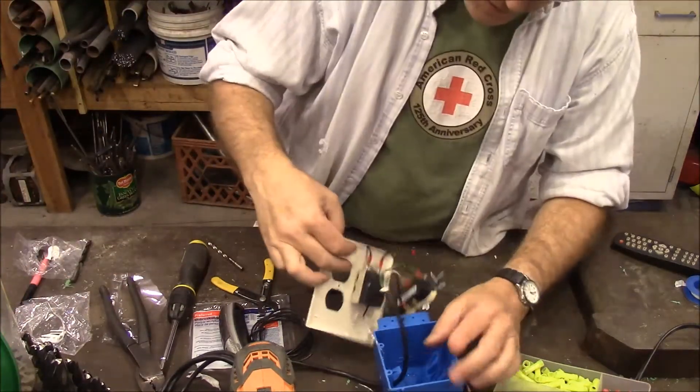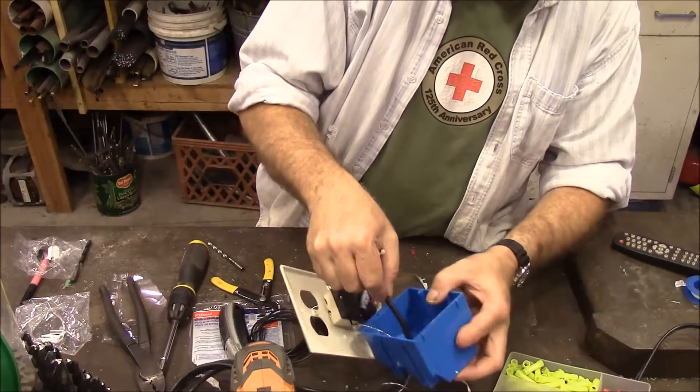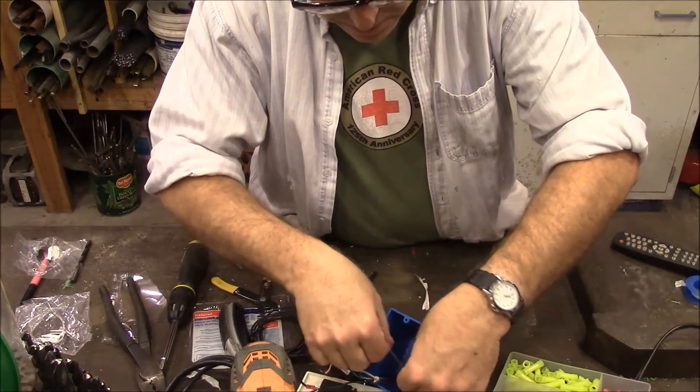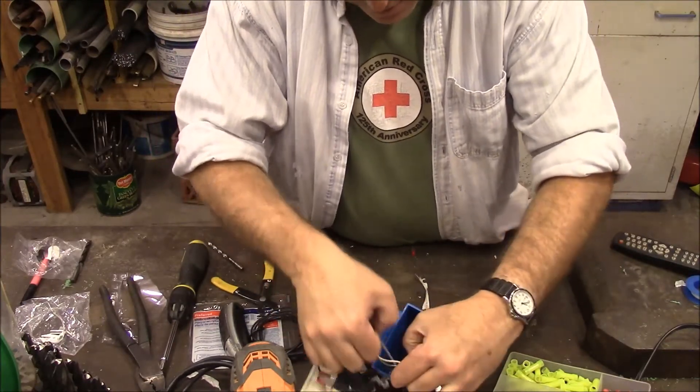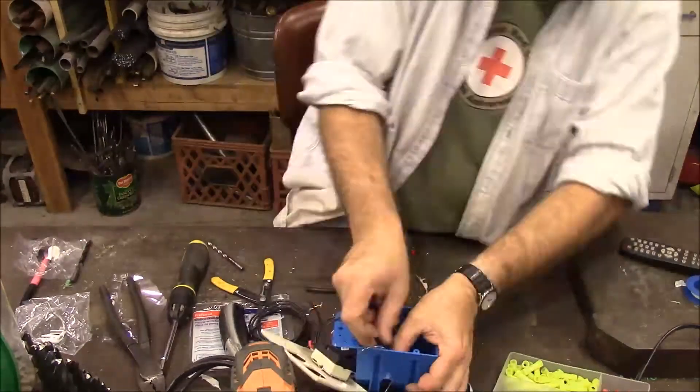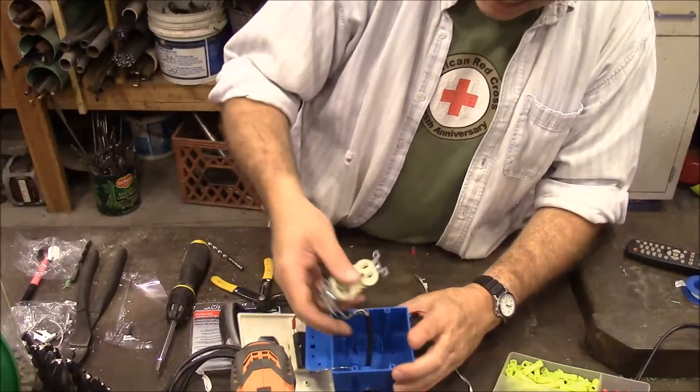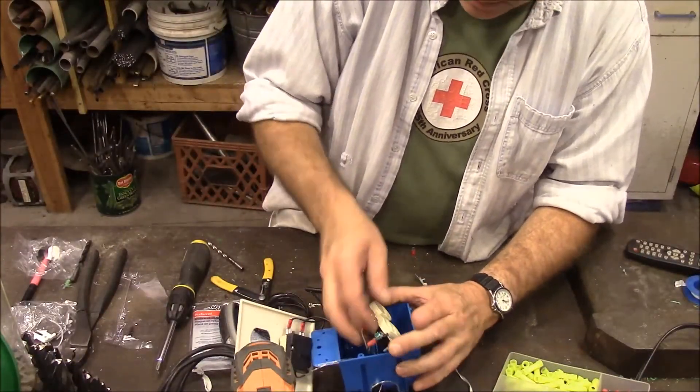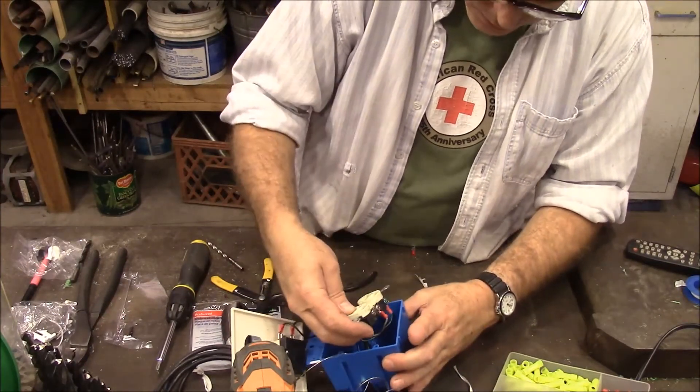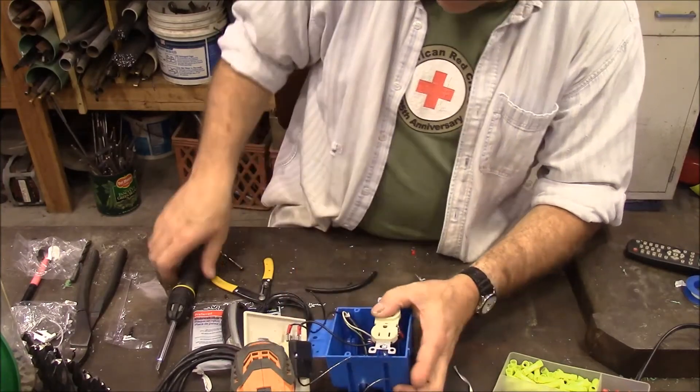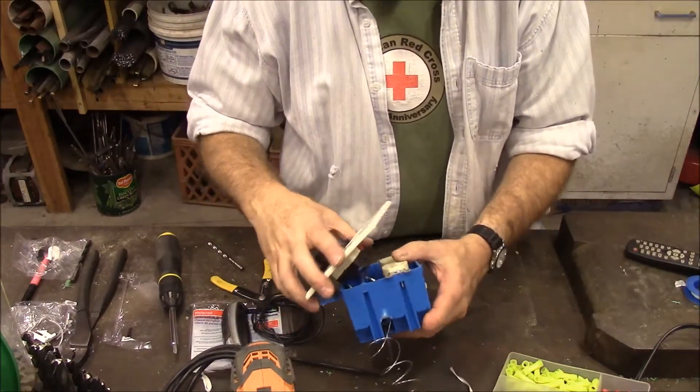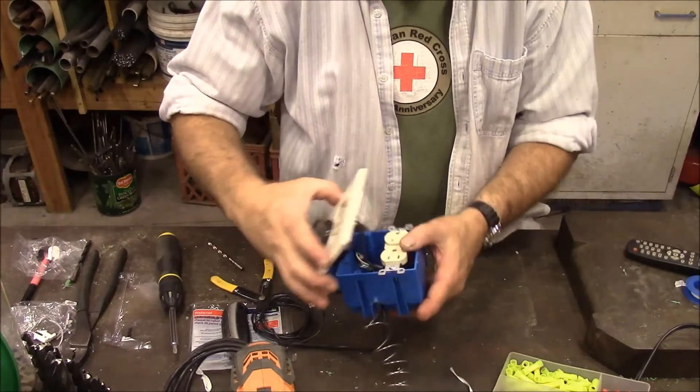Now before we close this up, we're going to take a wire tie and we're just going to tie the electrical cord to this flap in here just so it can't get yanked on. So then we're going to screw in our outlet. We're being careful that we're not crimping our capillary tube as it comes out there.